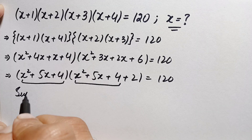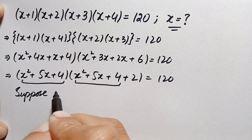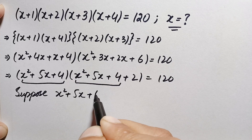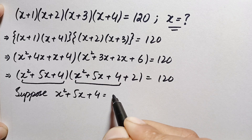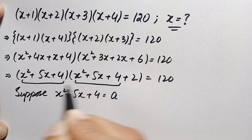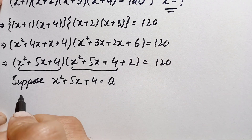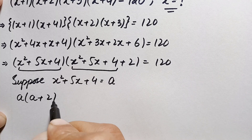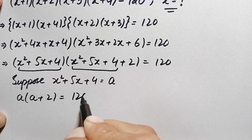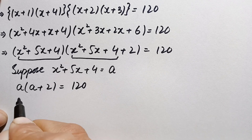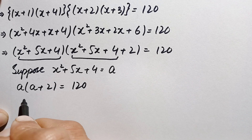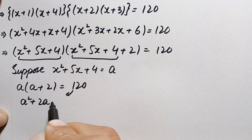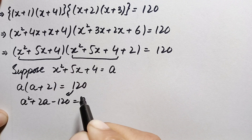Let us suppose x²+5x+4 = a. Then the equation becomes a(a+2) = 120. Let's solve this equation for the value of a.